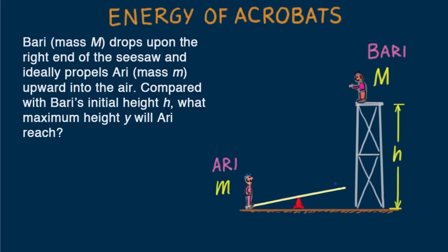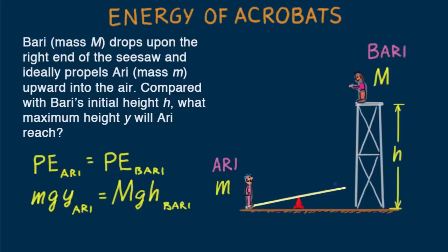So let's equate Ari's acquired potential energy at the top of his trajectory, where his kinetic energy reaches zero, to Bari's initial potential energy. In equation form, that means potential energy of Ari equals potential energy of Bari, or mgy_Ari equals Mgh_Bari, where y is the maximum height to which Ari is propelled, h is the height Bari drops, the small m is Ari's mass, and the capital M is Bari's mass.